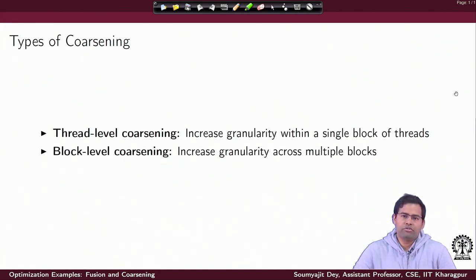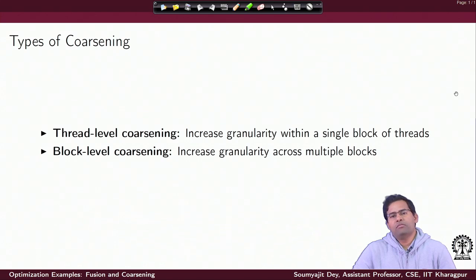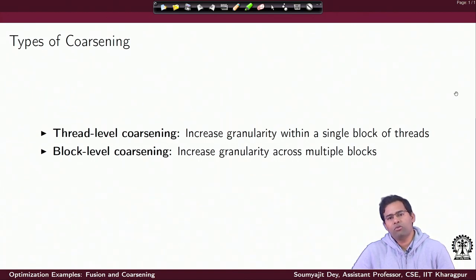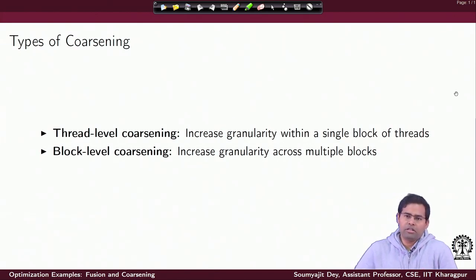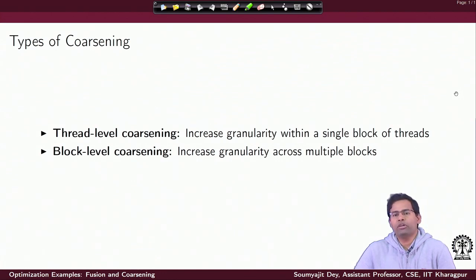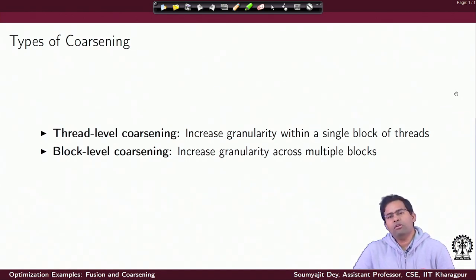When we say thread level coarsening, that means increasing granularity within a single block of threads — you are coarsening threads by giving them more activity per thread, but those activities are all inside a single thread block. The other could be block level coarsening, where you increase the granularity of coarsening across multiple blocks. When you coarsen a thread, you give it more activity not from the original block of threads, but from other blocks of threads.